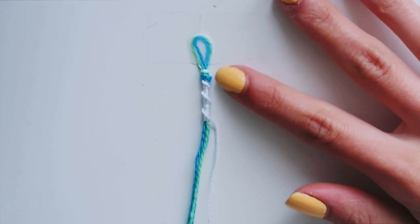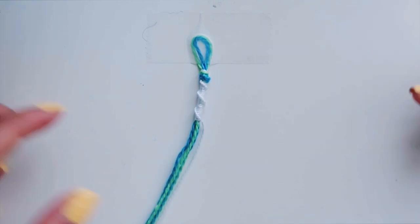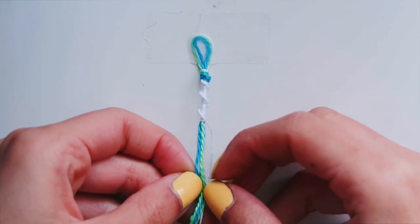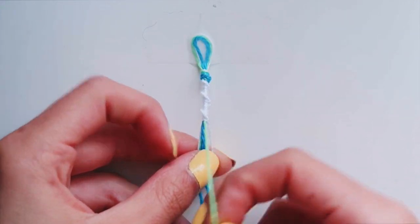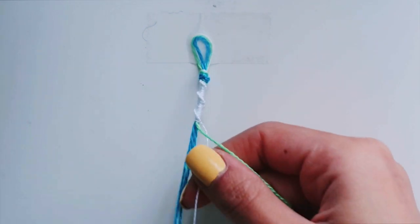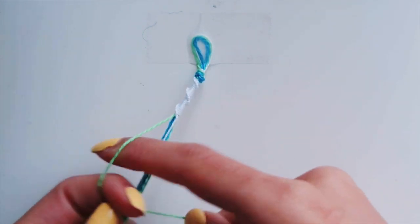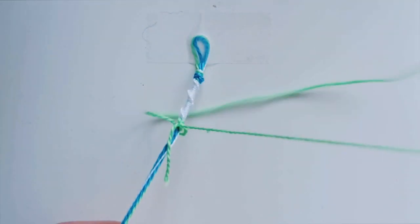Okay, so now that this is as long as I want it to be, I'm gonna switch off to the next color. Basically, how you do that is you just take any string from here. I'm gonna take green because I want green to be the next color. And then I'm adding this white one back into the bunch. And basically, all I'm gonna do now is tie these knots using the green string. That's pretty much it.